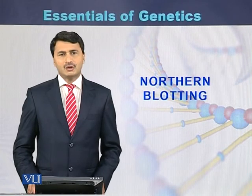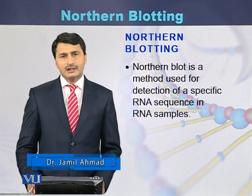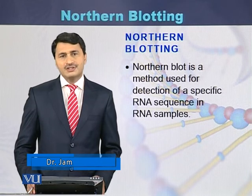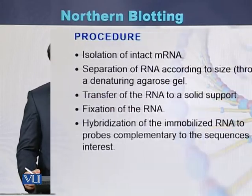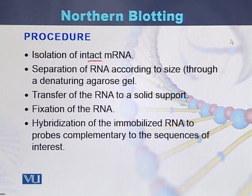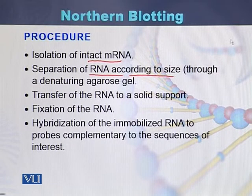Northern blotting is a molecular biology technique used for detection of a specific RNA sequence from RNA samples. The procedure begins with isolation of the messenger RNA, followed by separation of RNA according to their size on a denaturing agarose gel.